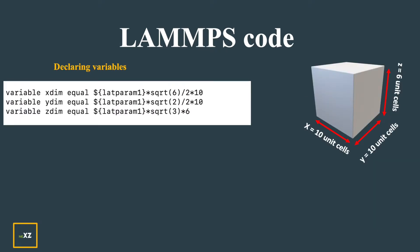First I declare the variables: the number of unit cells in the X direction, Y direction, and Z direction. I get the length along each direction by multiplying with sqrt(6)/2 in X, sqrt(2)/2 in Y, and sqrt(3) in the Z direction.